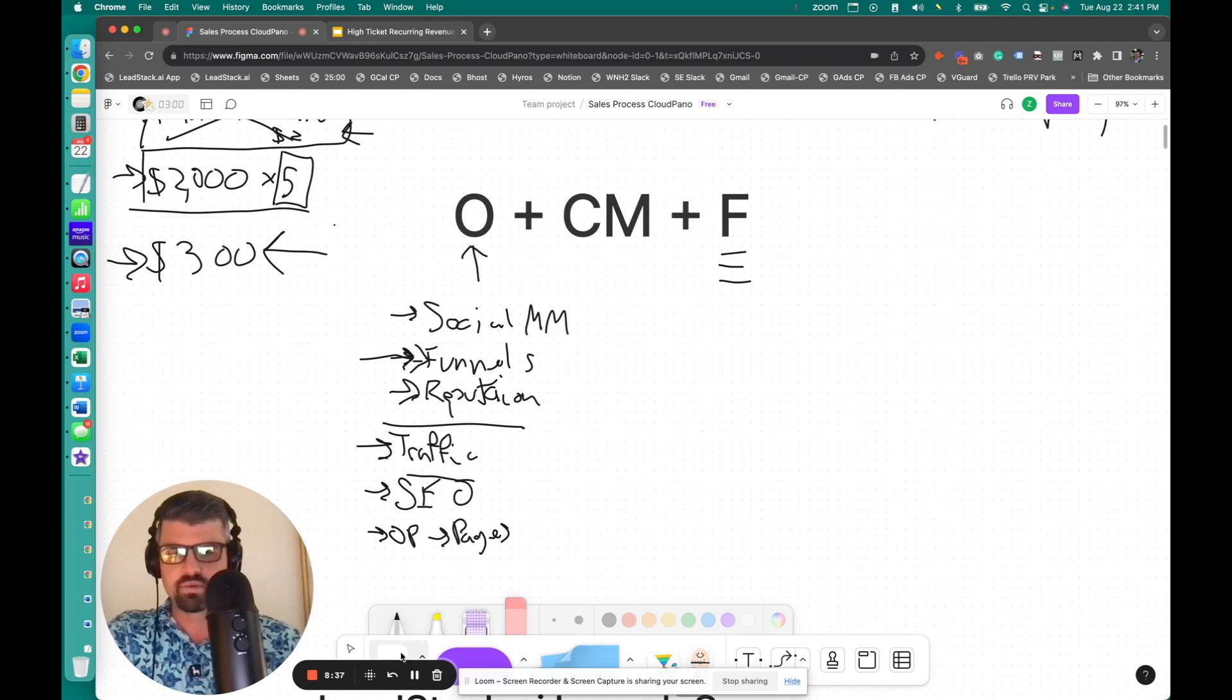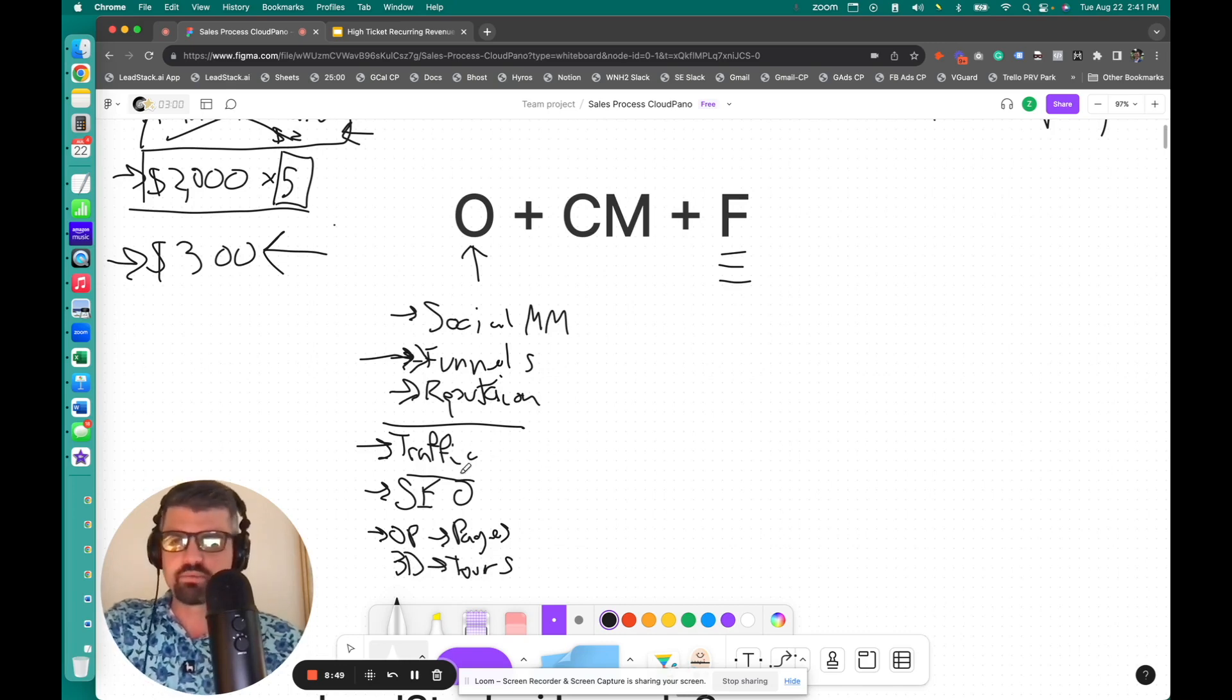And of course, I'm going to include 360 or 3D tours here because we do that at Cloud Piano. 3D tours, which helps clients get a full visual of their space. So I'm just showing you some examples. Hope this is helpful. And it gives your mind kind of flow for what you could do. And I always say work backwards from the customer's problems, right?